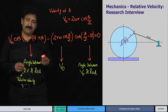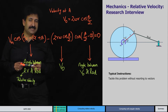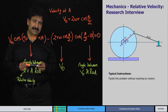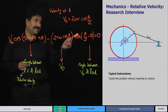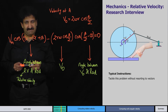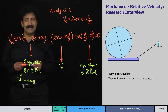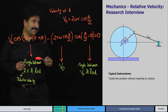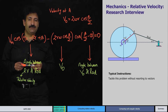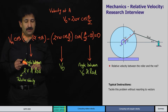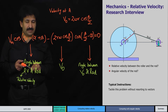One of the expectations from the interviewer is that without resorting to vectors this situation has to be tackled. The roller is rolling on a horizontal surface and a rod which is hinged at O slips on the roller. At this given instant we need to compute two parameters: the relative velocity between the roller and the rod, and the angular velocity of the rod.